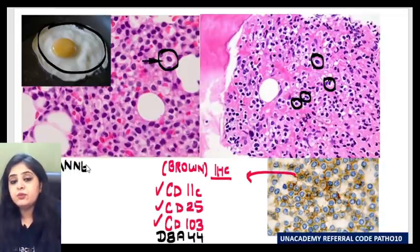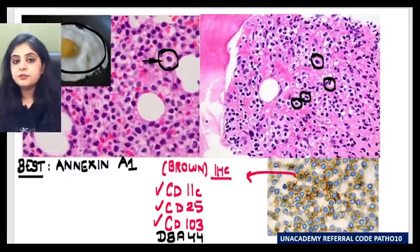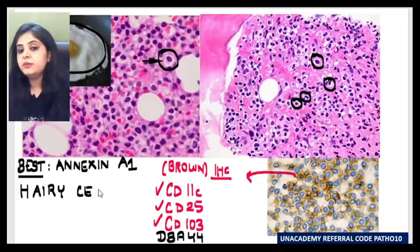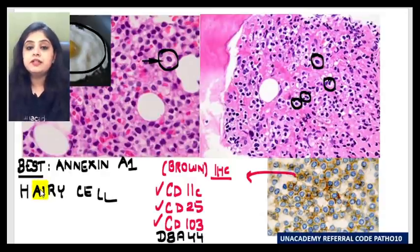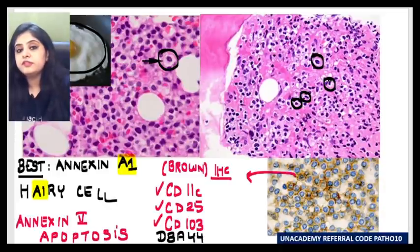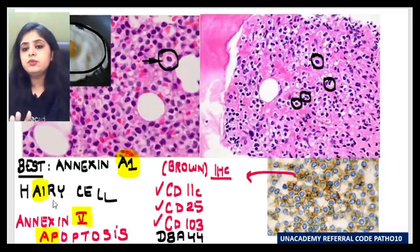The best marker for hairy cell leukemia is Annexin A1. To remember this: the way you write 'hairy cell leukemia,' the alphabets A and 1 appear in it — so the best marker is Annexin A1. The other annexin studied in pathology is Annexin 5, which is the marker of apoptosis — remembered as 'AP' for Annexin Penta in apoptosis. So Annexin A1 is for hairy cell leukemia; Annexin 5 is for apoptosis.